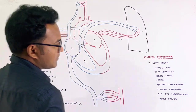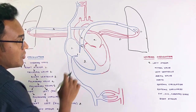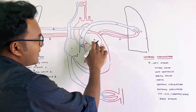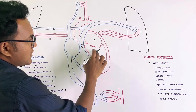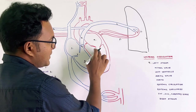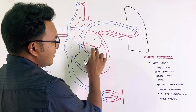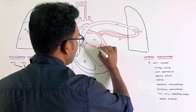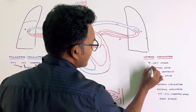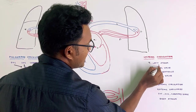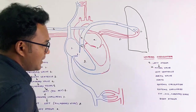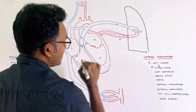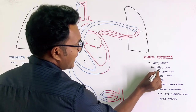From the left atrium, the blood is oxygenated blood. The left atrium passes blood to the left ventricle through a valve called the mitral valve, also known as the bicuspid valve.